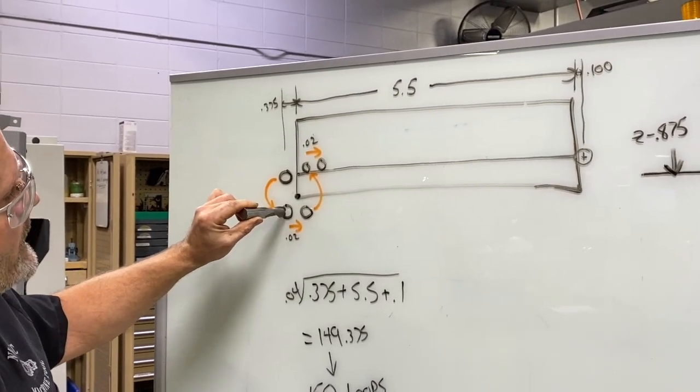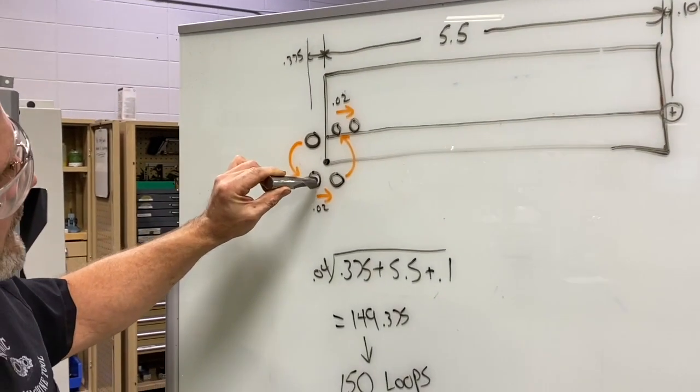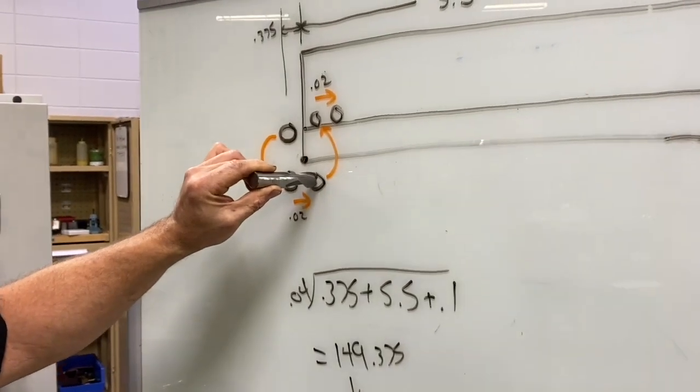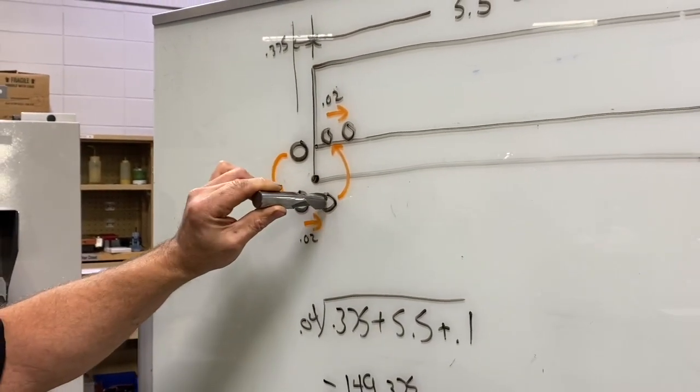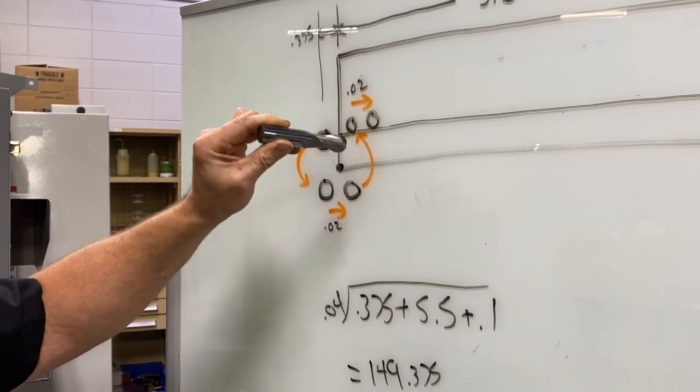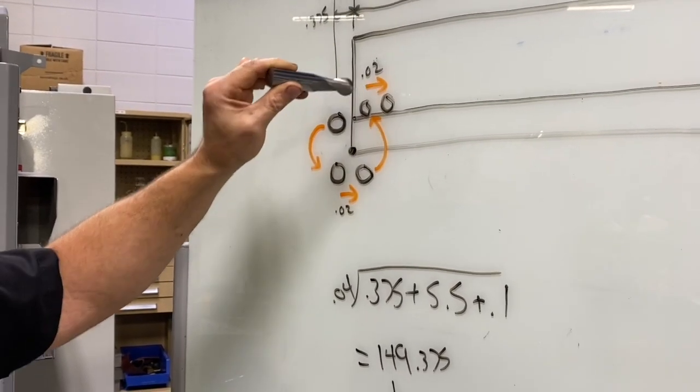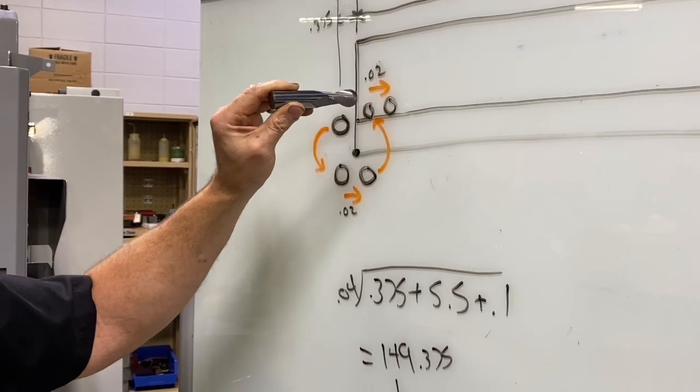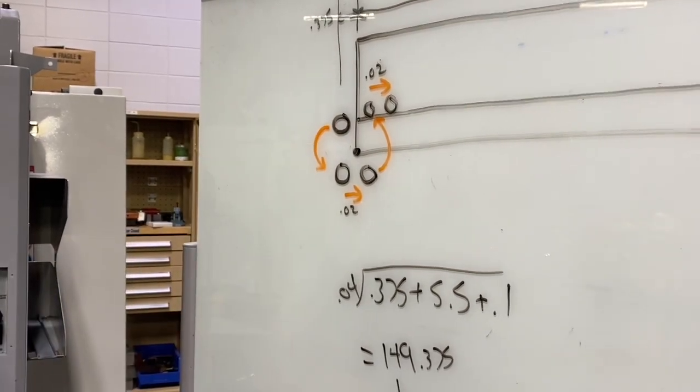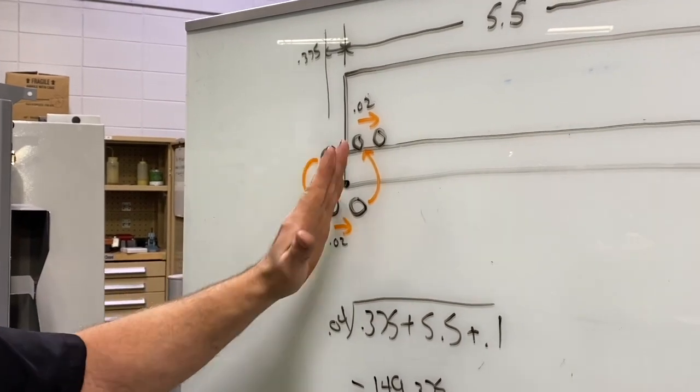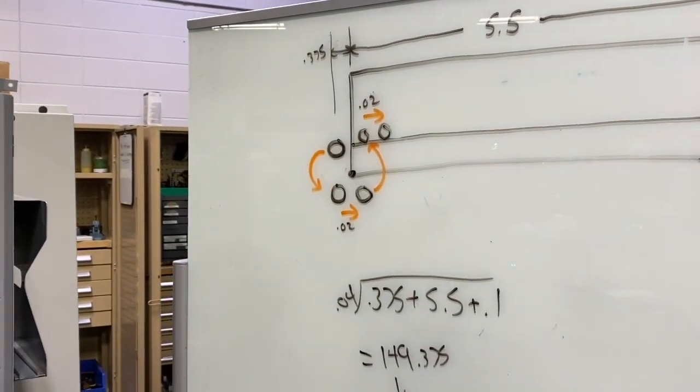And then what we're going to do is go into our program and we're going to do an incremental X step over of 20 thousandths, and then we're going to do an opposite interpolation move back to the top of the part, and then we're going to step over an additional 20 thousandths to prepare the machine to go into a looping cycle. So we're basically just going to loop that cycle all the way across the length of that part.